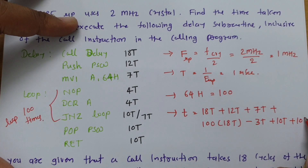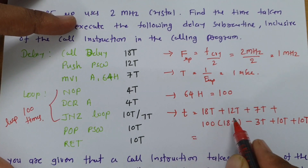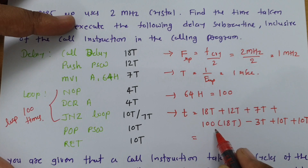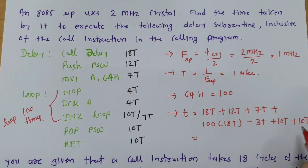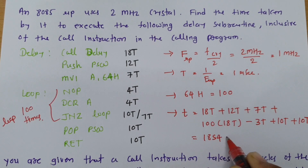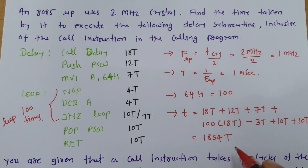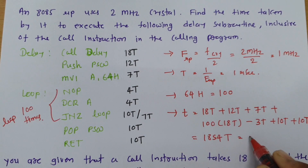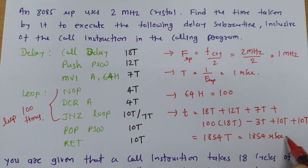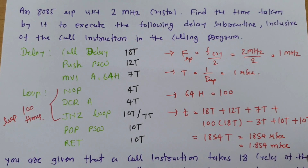Adding everything: 18 (CALL) + 12 (PUSH) + 7 (MVI) + 1797 (loop) + 10 (POP) + 10 (RET) = 1854T states. Since each T-state is 1 microsecond, the total time is 1854 microseconds, which equals 1.854 milliseconds. This is how we solve this kind of question.